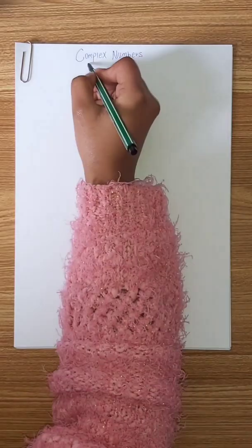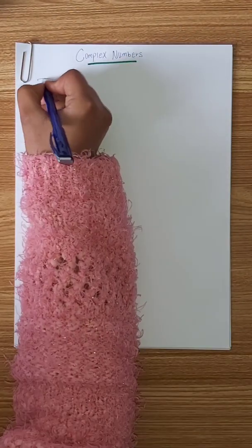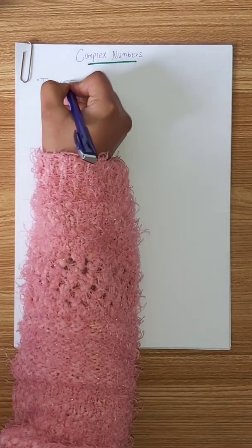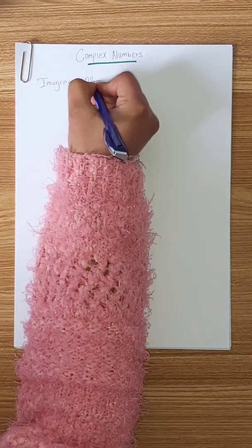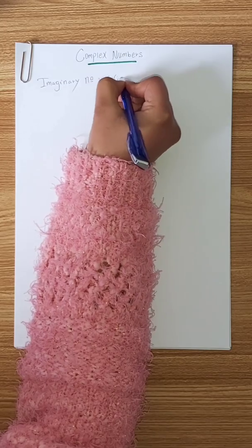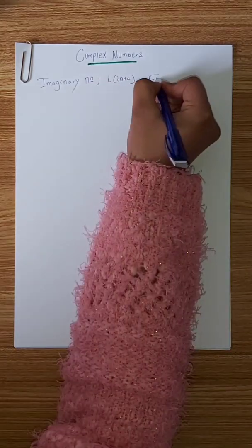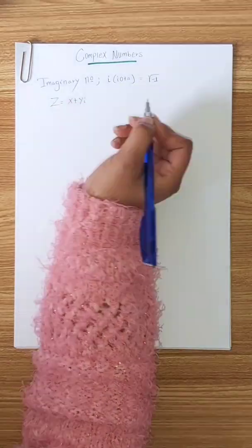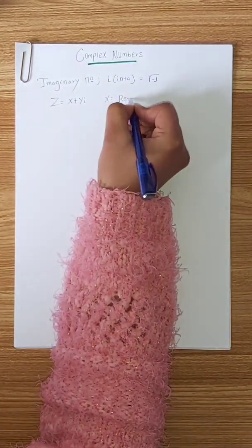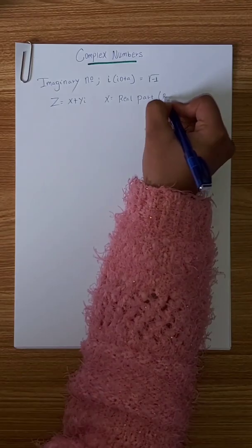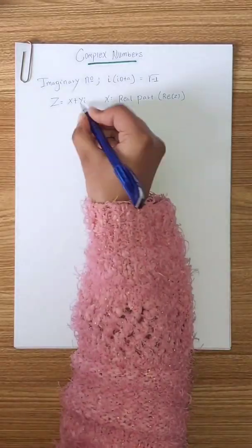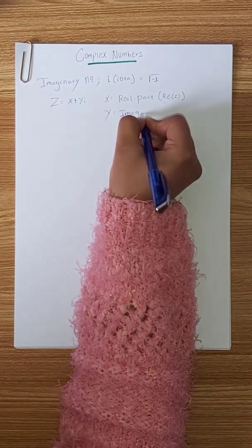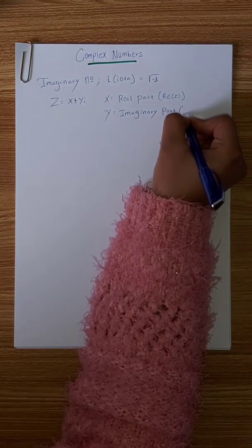This is complex numbers for Grade 11, Topic 7. The imaginary number i is defined as i equals the square root of negative 1. A complex number z is written as x plus yi.